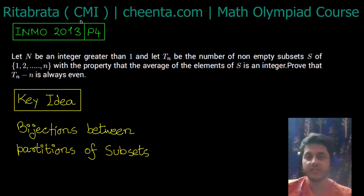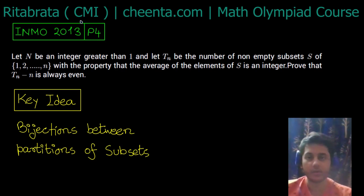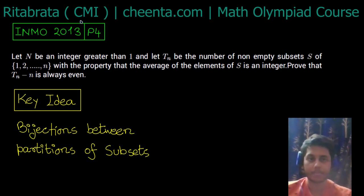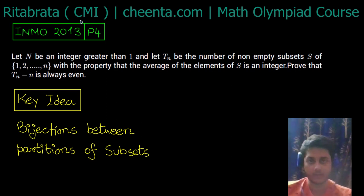The question says: n is an integer greater than 1, and T(n) is the number of non-empty subsets S of {1, 2, ..., n} with the property that the average of the elements of S is an integer. We have to prove that T(n) minus n is always even.